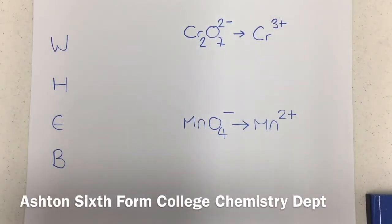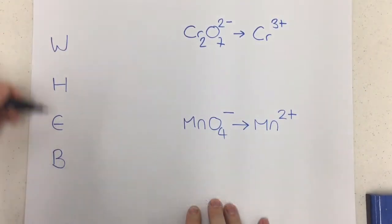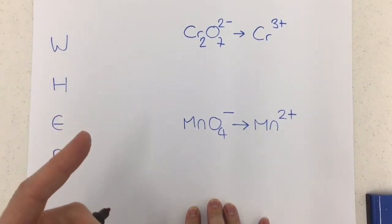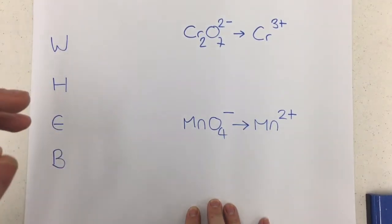Hi everyone and welcome back again to ASFC Chemistry where I'm taking you through how to balance some of the more complicated redox half equations using a technique that I like to call WEB. So we use WEB because it helps us introduce waters, hydrogens, electrons and double check for balancing as a way of seeing how one of these equations can balance and I can't emphasize enough that's going to be under acidic conditions.